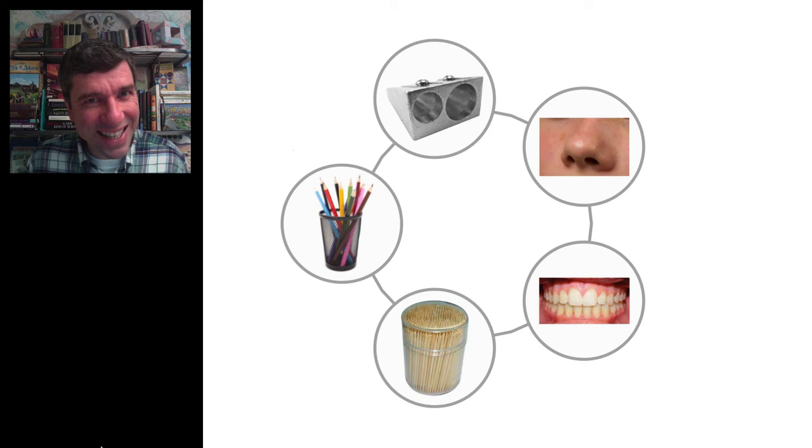Here's another one. The only one that might not be obvious there, but would be obvious for kids, is how is a pencil sharpener linked to the nose? Well, they both have two holes.